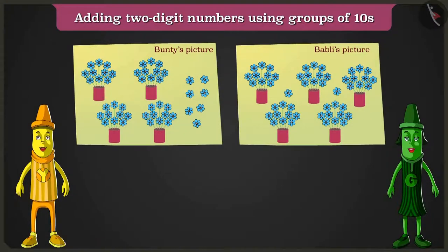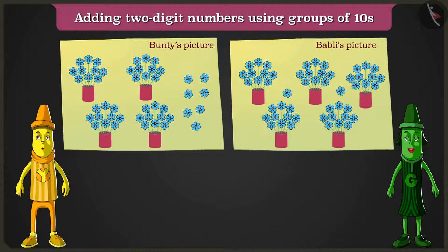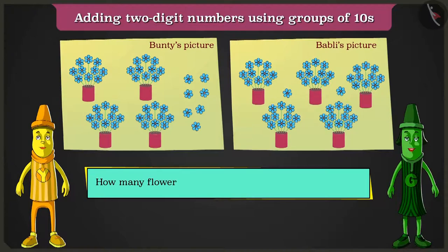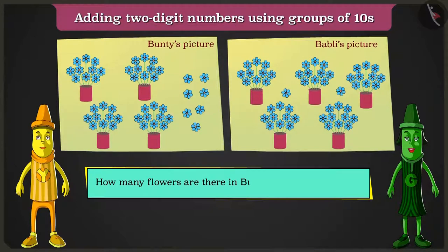Look, Greeny, Bunty and Bubbly have drawn paper-made flower pots with ten flowers each. And yes, there are some loose flowers too. Yellow, can you tell me? In Bunty and Bubbly's drawing, how many flowers are there in total? Let us count them.